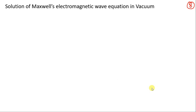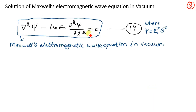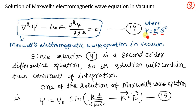Welcome back. Now we will discuss the solution of Maxwell's electromagnetic wave equation that we derived in the previous part of the lecture. This was Maxwell's electromagnetic wave equation, where psi stands for electric field or magnetic field. Psi is also called wave function, so please remember that in the case of electromagnetic waves, the wave function is either electric field or magnetic field.